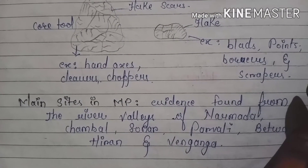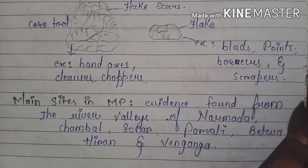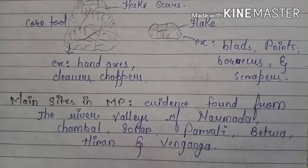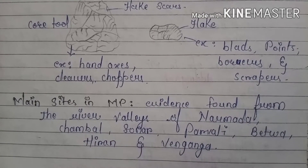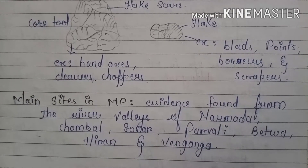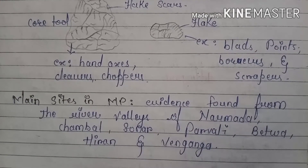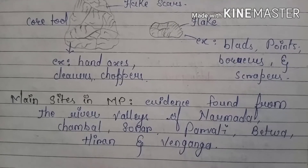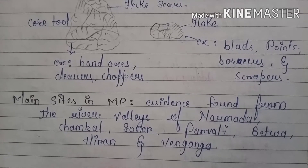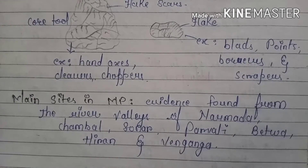Evidence has been found from the river valleys of Narmada, Chambal, Sunar, Parvati, Betwa, Hiran, and Wainganga. These are the main sites where Paleolithic evidence has been discovered.